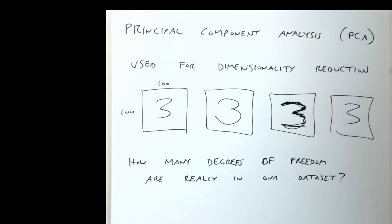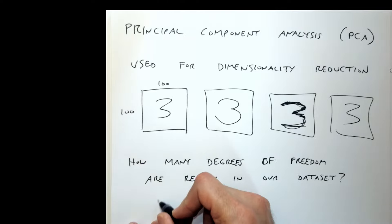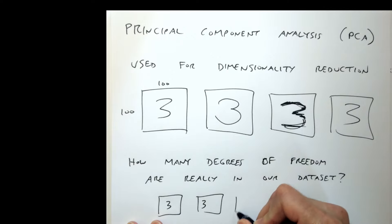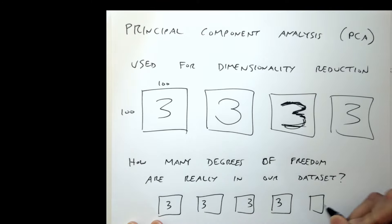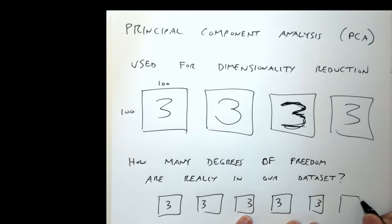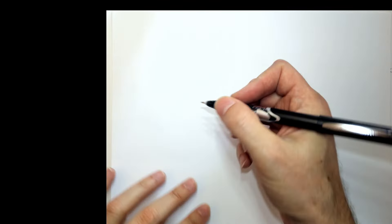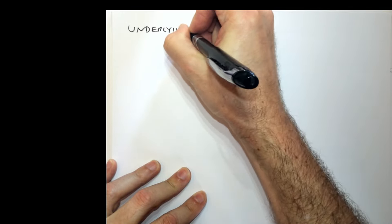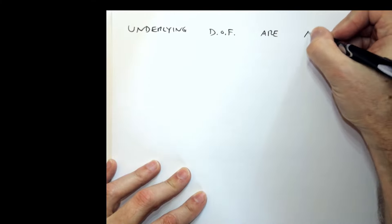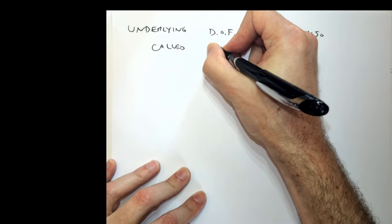To take it to an extreme, suppose I only had one three — a robot that always wrote three the same way. The only variation might be translation (appearing differently in the image), a little rotation, or different sizes. If I think about the variations, there's really only XY translation, one degree of rotation, and one degree of how big the character is — really only about four underlying degrees of freedom in how this robot might draw a three. The question is: how do we discover what those underlying degrees of freedom are? These underlying degrees of freedom are also called latent variables.